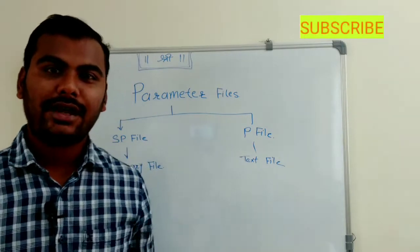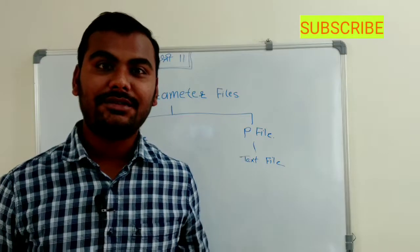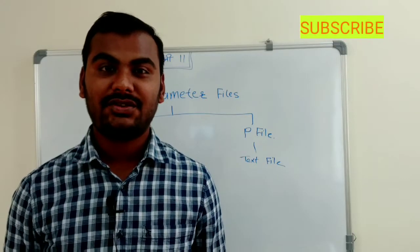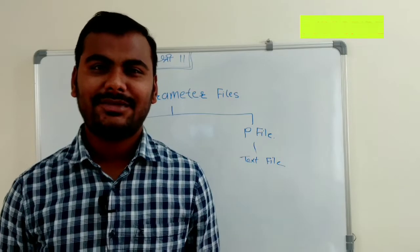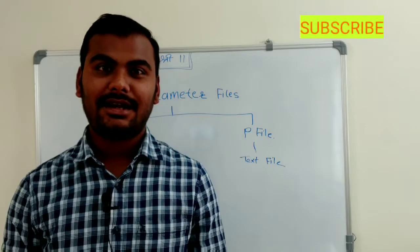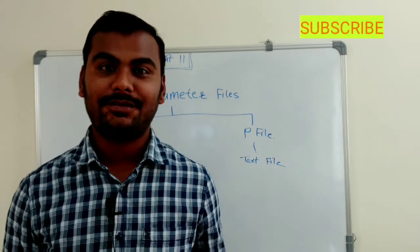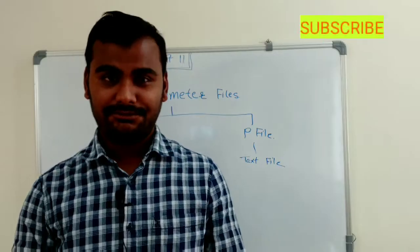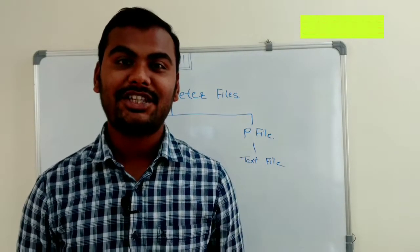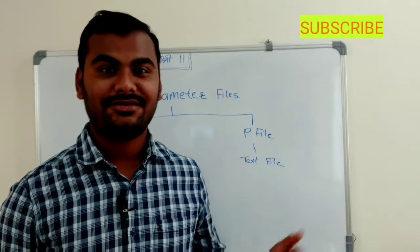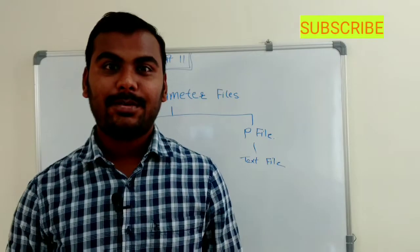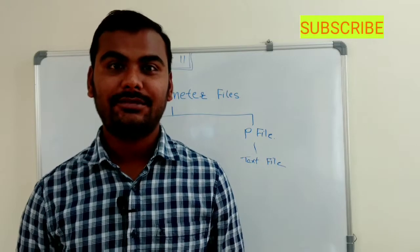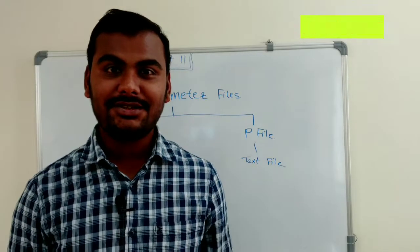The next question is: when we have two files, how can you understand whether your database was started with the SPfile or the PFile? And how does Oracle decide which parameter file to use? By default, whenever we are starting our database, it searches for the SPfile first, because it's a binary file understood by Oracle. If the SPfile is not available, it will start with the PFile. So SPfile always takes higher priority in the Oracle database startup process.